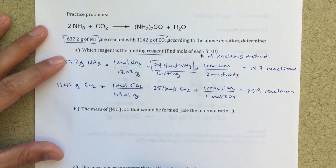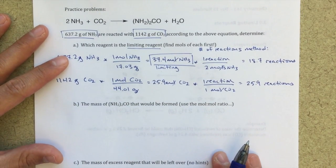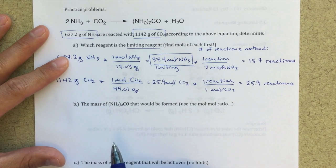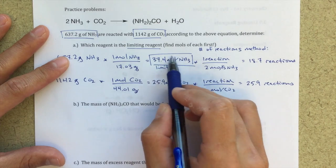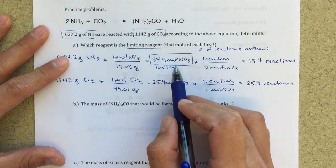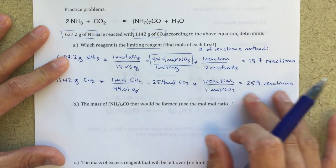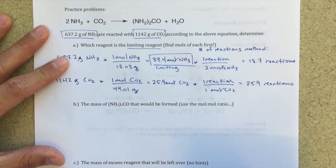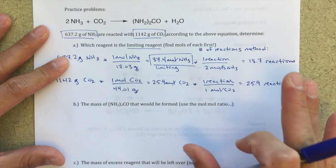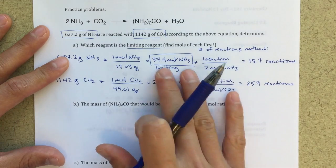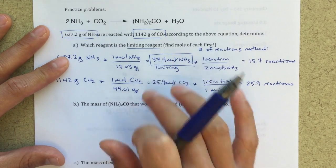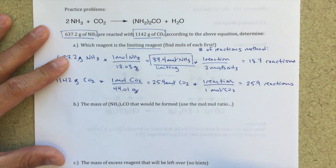So, the next part of this question, the mass of product that would be formed, we're going to use this moles of limiting reactant. This whole other bit, number of reactions, we can sort of forget about that for now. The whole purpose of this was just for us to figure out what the limiting reactant was. Now that we've figured it out, then we're going to use that moles of limiting reactant to do the rest of the problem.